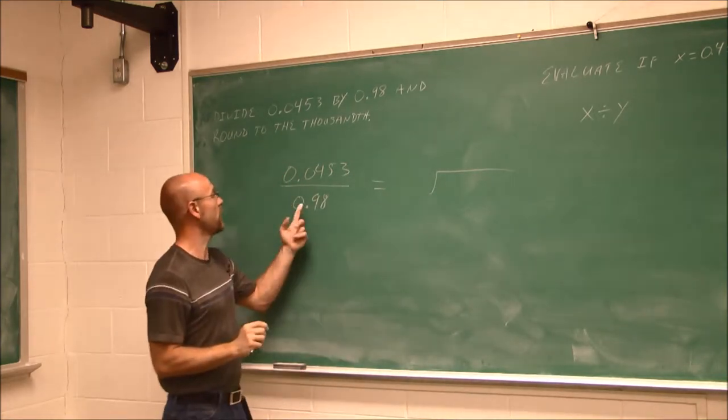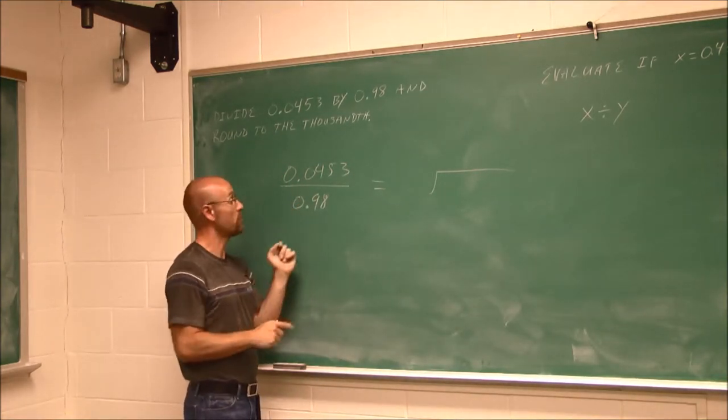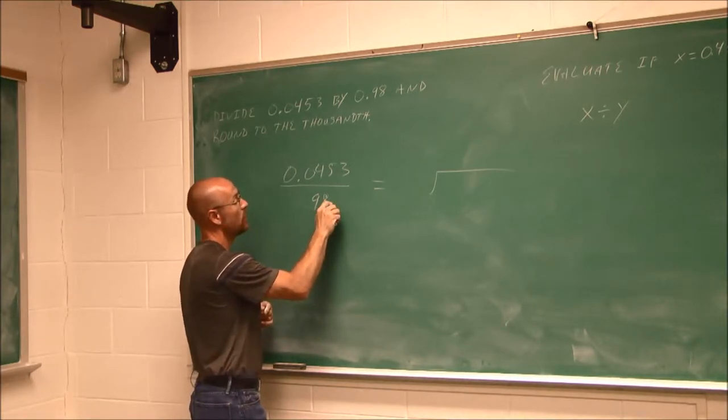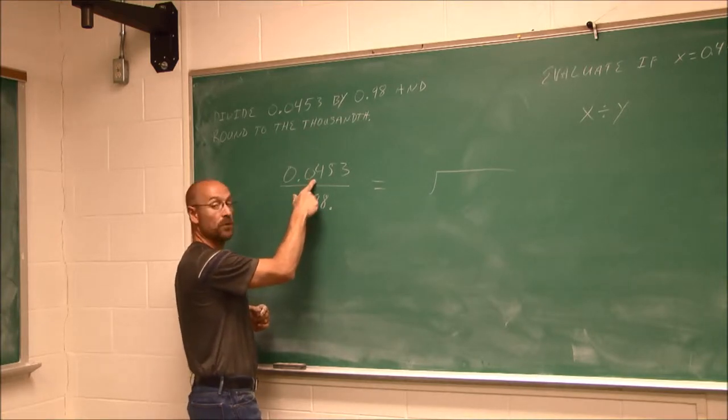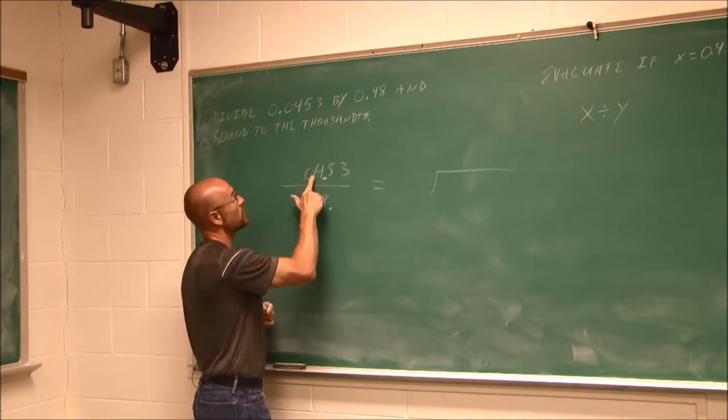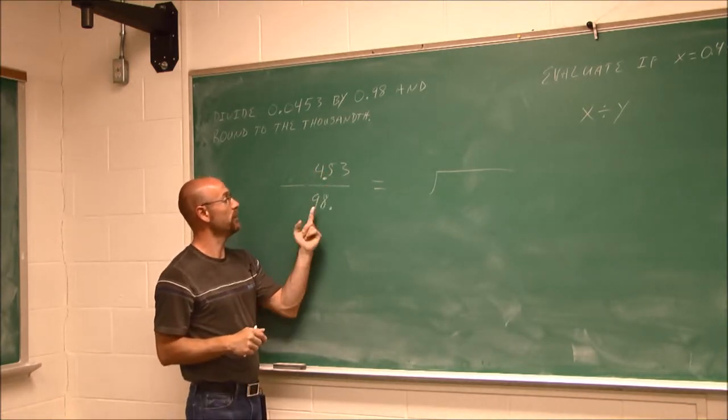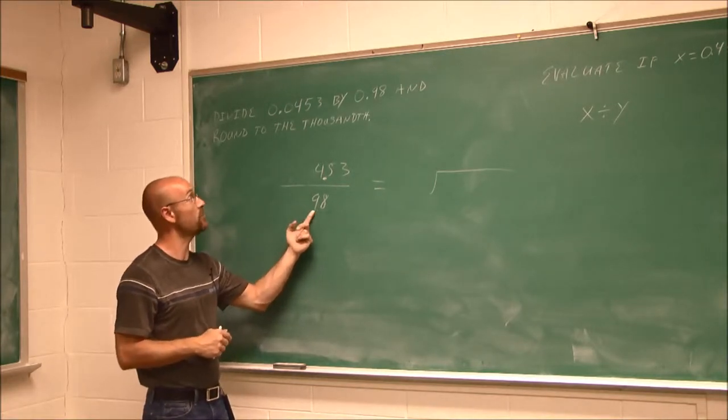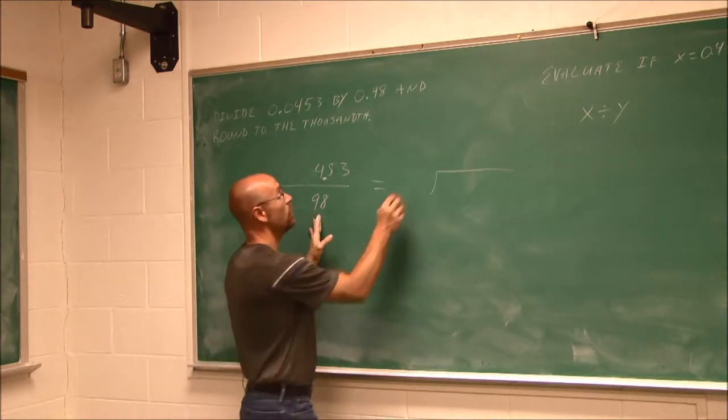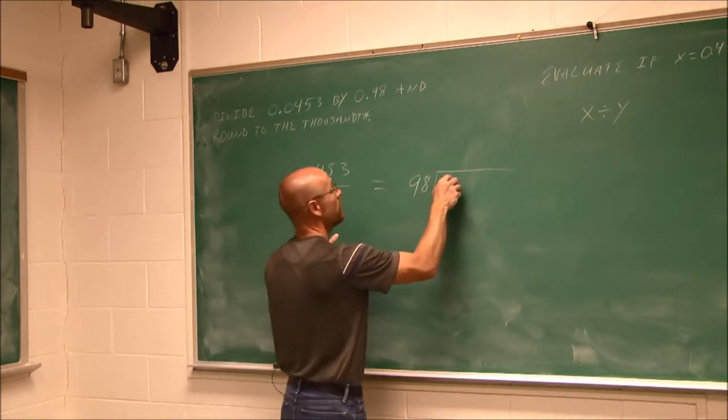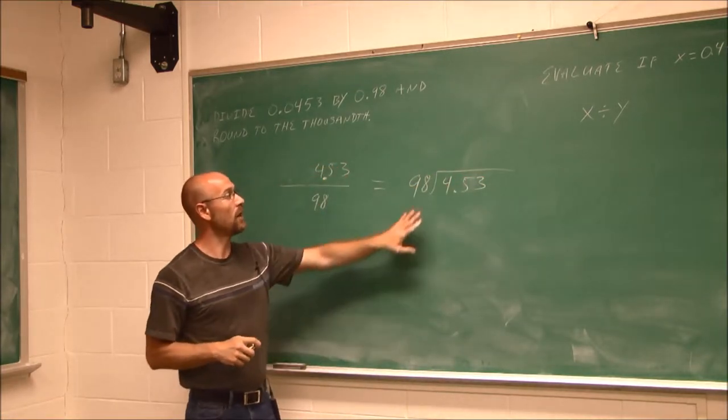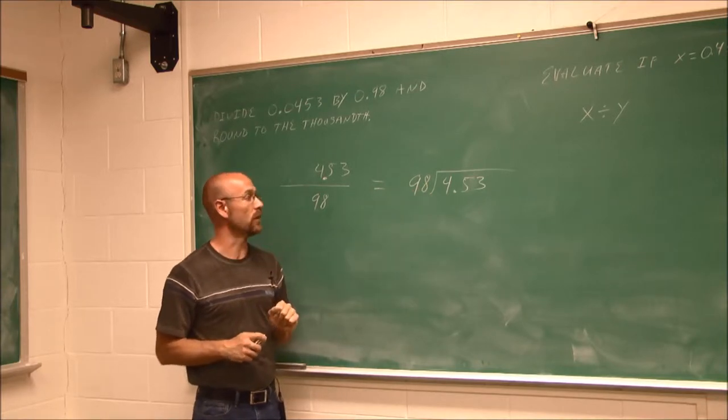Before I do that, I'm going to move the decimals while it's in this form. If I move this decimal one, two spots to the right, what I do to my denominator I have to do to my numerator. So I'm going to move this decimal one, two spots to the right. So now we can see 4.53 divided by 98. This is the exact same value as this right here. So I move my decimals, and now I know my divisor goes out here and my dividend under that division bar. The decimal is already gone and I'm ready to do this long division.